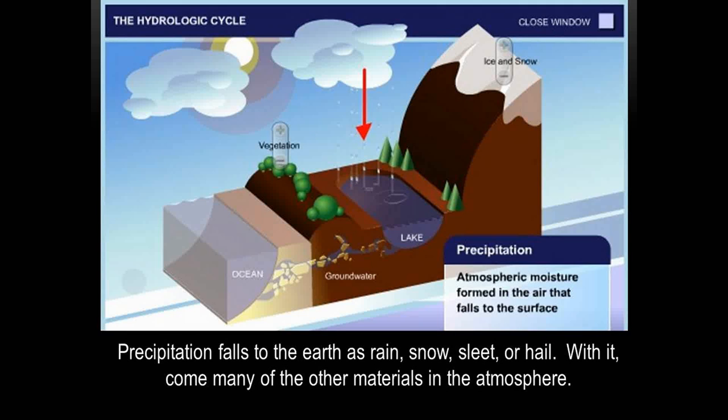Precipitation falls to the earth as rain, snow, sleet, or hail. With it come many of the other materials in the atmosphere.